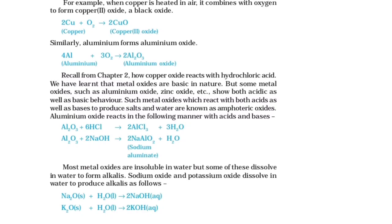Recall from Chapter 2 how copper oxide reacts with hydrochloric acid. Metal oxides are basic in nature, but some metal oxides such as aluminium oxide and zinc oxide show both acidic as well as basic behavior. Such metal oxides that react with both acids and bases to produce salts and water are known as amphoteric oxides. Aluminium oxide reacts as follows: Al₂O₃ + 6HCl → 2AlCl₃ + 3H₂O, and Al₂O₃ + 2NaOH → 2NaAlO₂ (sodium aluminate) + H₂O.